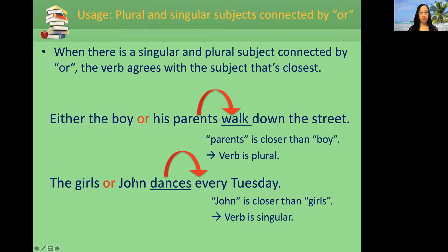This should be 'John dances' — the verb is singular because John is closer than girls. We know that John is closer, so the verb is singular.